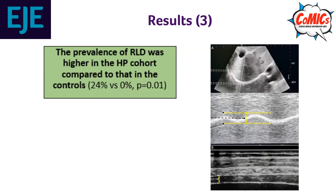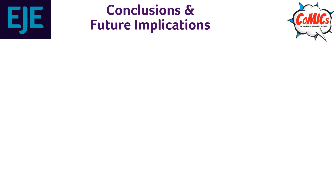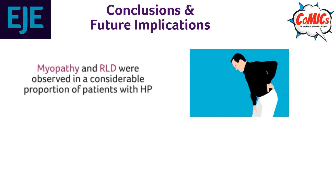The prevalence of restrictive lung disease was higher in the hypoparathyroidism cohort compared to controls. Diaphragmatic excursion and thickness on deep inspiration were reduced in patients with hypoparathyroidism.